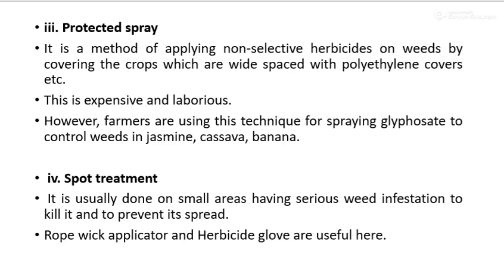Third is protected spray. In this method, a non-selective herbicide is applied on weeds by covering the crops — which are widely spaced — with polyethylene covers to protect them. This is an expensive and laborious method. However, farmers use this technique for spraying glyphosate to control weeds in jasmine, cassava, and banana.